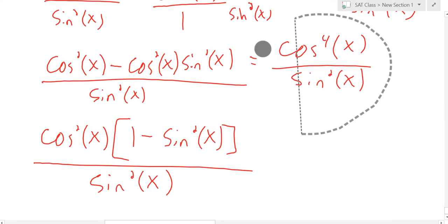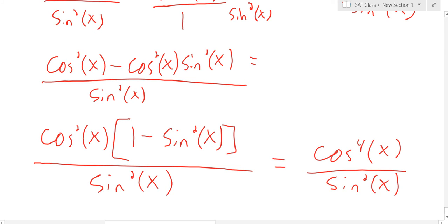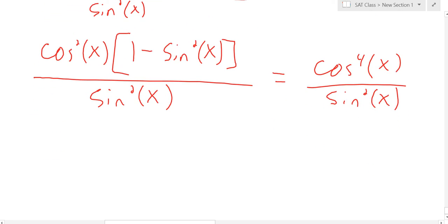Remember, we're trying to get to here. And it happens to work out that one minus sine squared is cosine squared. And we're multiplying it by another cosine squared. So that's just cosine to the fourth over sine squared, which equals what we wanted it to equal. Okay?